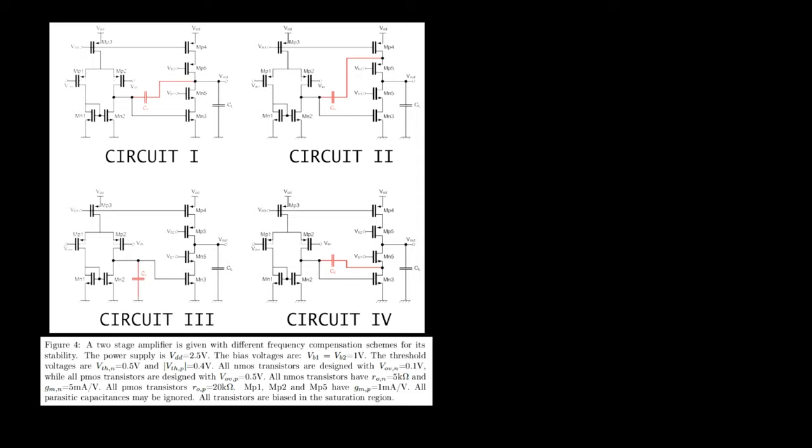This is figure 4. It shows four times the identical two-stage op-amp circuits with different configurations for the compensation capacitor. The question asks us to analyze the negative 3 dB frequencies of all four circuits.